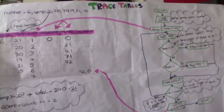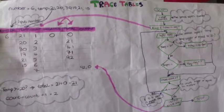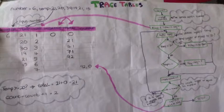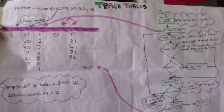So first it asks you to input the number and we know that the person number is 6. Then it tells you that count is 1, total is 0 and negative is 0. So we put that in the trace table.